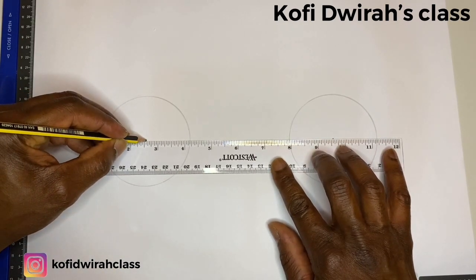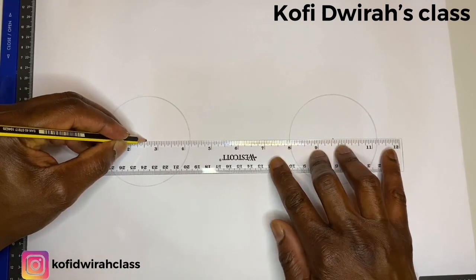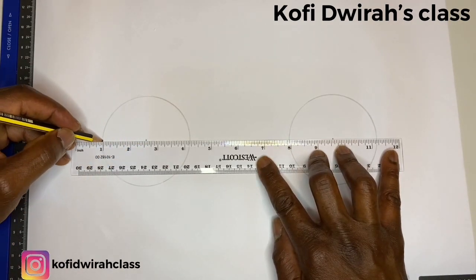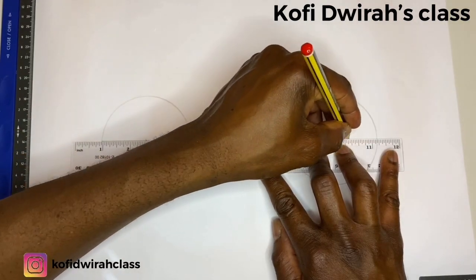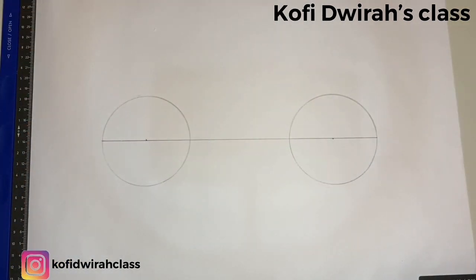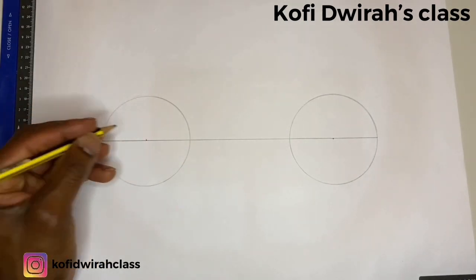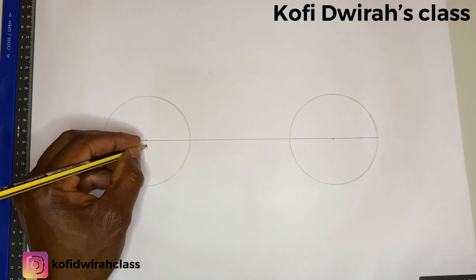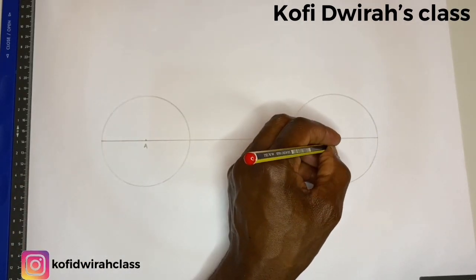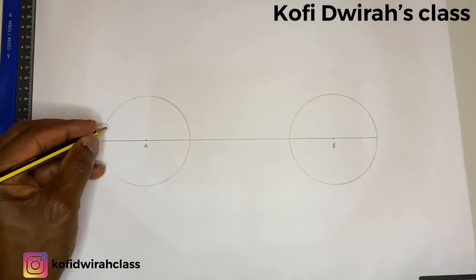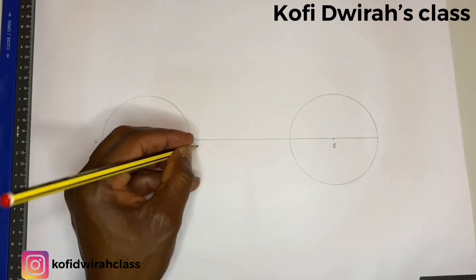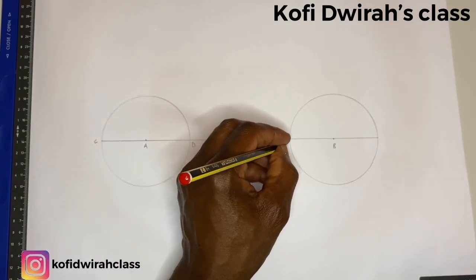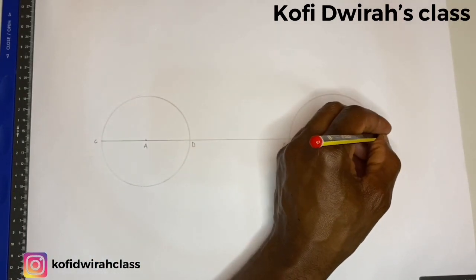Then we draw a line from the centers through the circumference, like this. Good. So we have the centers to be A and B, then we have C and D, then we have E and F.